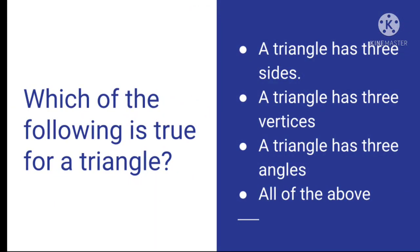Question number 1: Which of the following is true for a triangle? Your options are: a triangle has 3 sides, a triangle has 3 vertices, a triangle has 3 angles, or all of the above. Choose the correct answer and write it in your notebook.